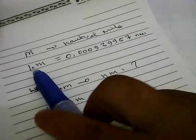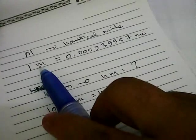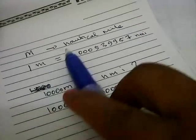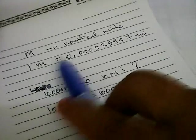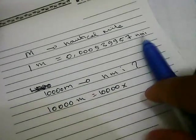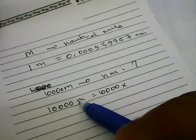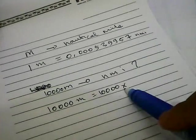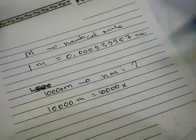Well, in this case, 1 meter is equal to 1 multiplied with this number. So in this case, 10,000 needs to be multiplied with this number too.